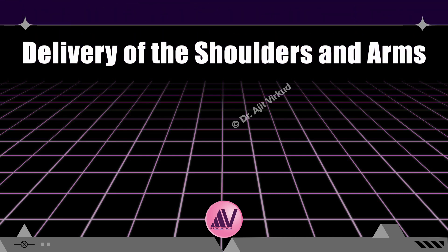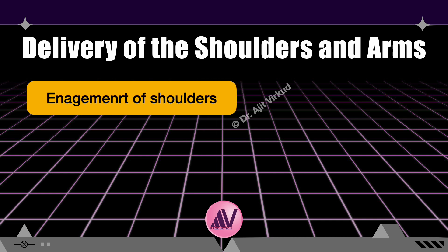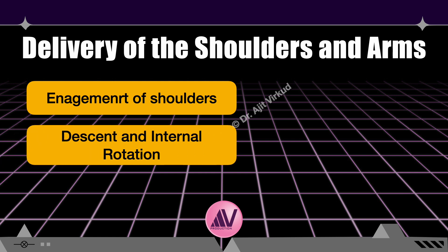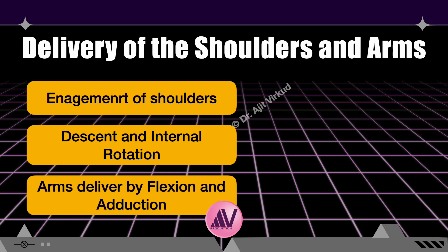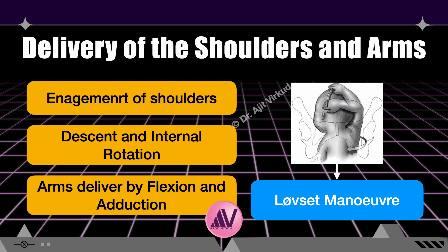Next is delivery of the shoulders and arms. The shoulders engage in the same oblique diameter as the breech and descend to the pelvic floor. The anterior shoulder then undergoes internal rotation, spontaneously or aided by the obstetrician. The posterior shoulder delivers first, followed by the anterior shoulder. If the arms are flexed over the chest as in complete breech, they deliver by flexion and adduction over the fetal chest. If one or both arms are extended — called nuchal extension — a manoeuvre called Løvset's manoeuvre is used, involving gentle rotation of the fetal body in either direction to bring the arms into a deliverable position.